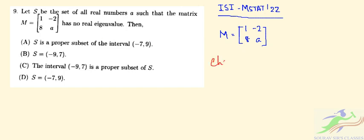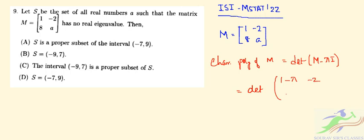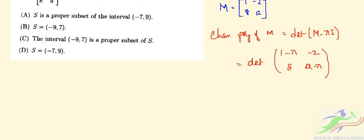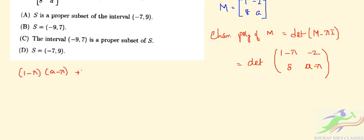So the characteristic polynomial will be the determinant of M minus λI. We find the determinant of the matrix [1-λ, -2; 8, a-λ]. So it will simply be (1-λ)(a-λ) plus 16.